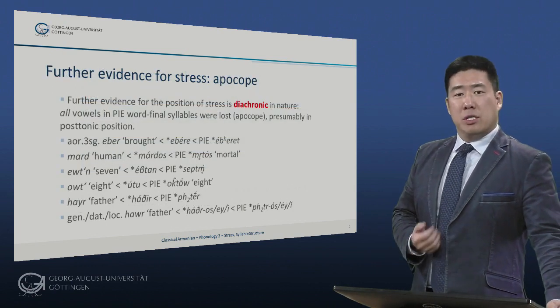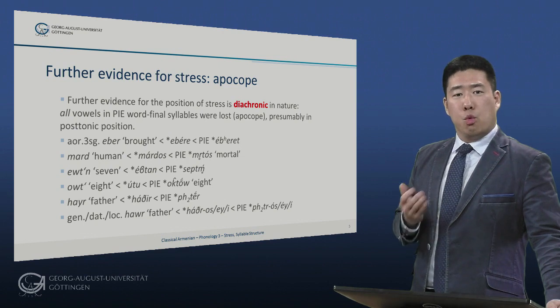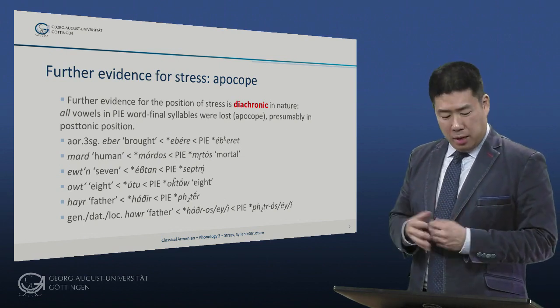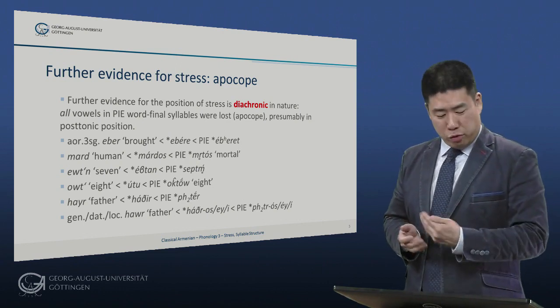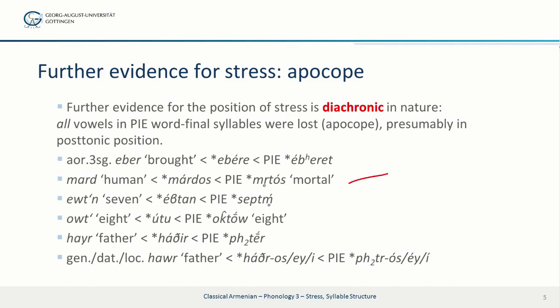There is further diachronic evidence for the position of stress from the history of Armenian. All vowels in Proto-Indo-European word-final syllables were lost by a change known as apocope. Presumably this happened because they were post-tonic, after the stressed vowel. For example, the word for human, mard, goes back to Proto-Indo-European mardos, but the stress first shifted to the penultimate syllable, giving classical Armenian mard. Similarly, the word for seven: Sanskrit septa shifted stress to the penultimate syllable; once the final n is preserved, the vowel has been lost.